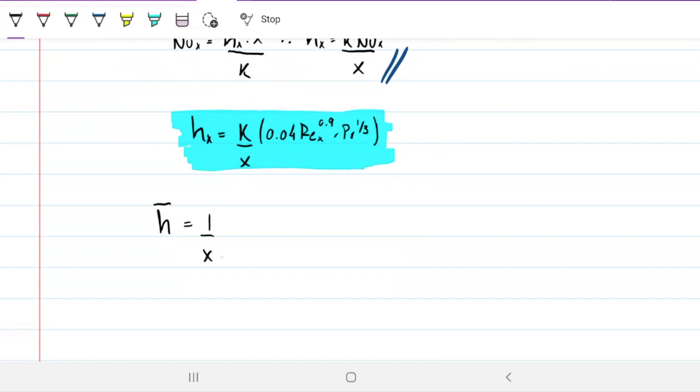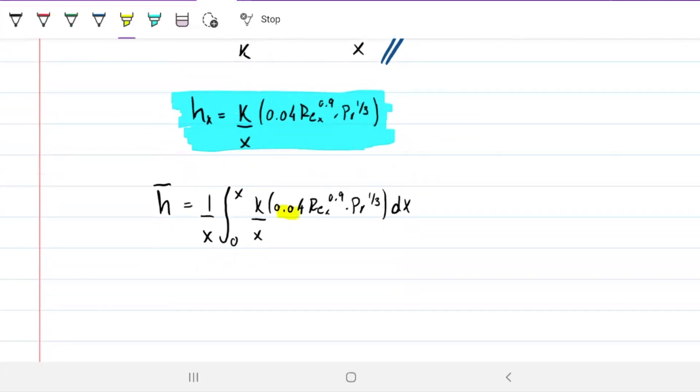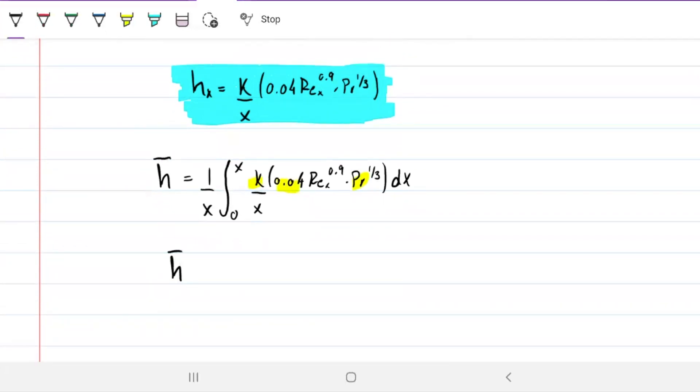1 over x integral from 0 to x of k over x times 0.04 Re_x^0.9 times Pr^(1/3) dx. It's just the kind of things you guys love doing, isn't it? But we can start with the simple things. This is a constant. This is not going to change regardless of x. This doesn't change with x. Prandtl doesn't change with x. So these guys can be removed from our integration. So we're going to have k over x times 0.04 Pr^(1/3) and I'm multiplying by the integral from 0 to x of Re_x^0.9 dx over x.